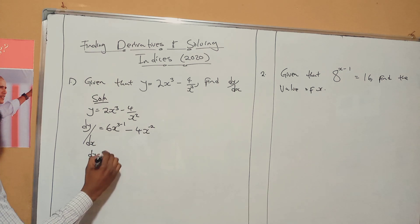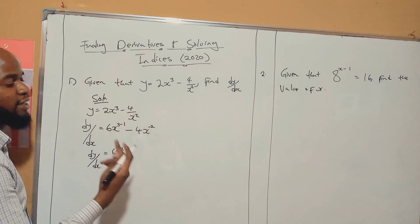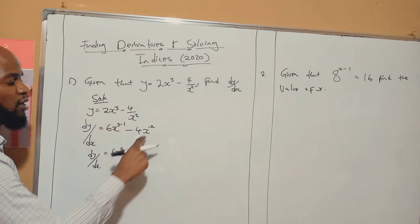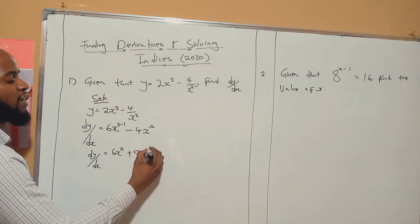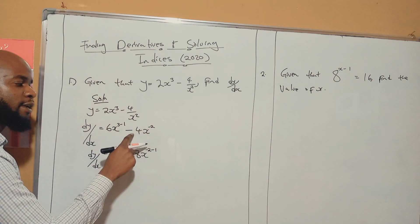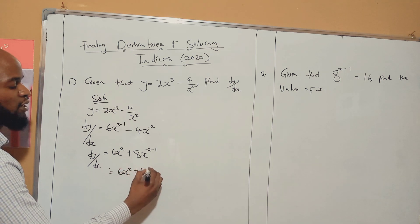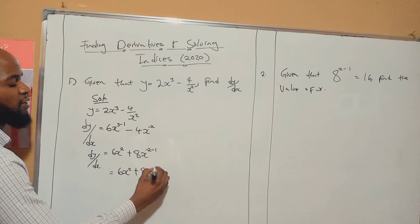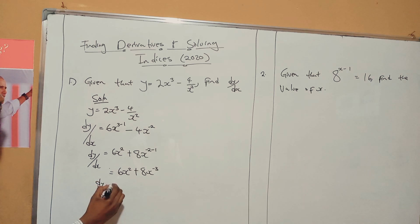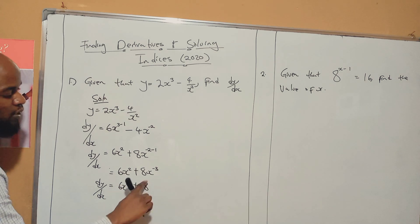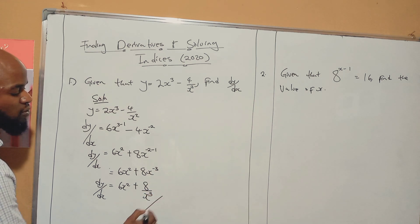So here, we continue. dy/dx is equal to 6x. 3 minus 1 is 2. Remember, we took it up. The steps are: first you multiply, then you subtract. So negative 2 times negative 4 is positive 8x. And then we have negative 2 minus 1. I'm not yet done — this was two marks. So 8x to the power of negative 3. Negative 2 minus 1 is negative 3.